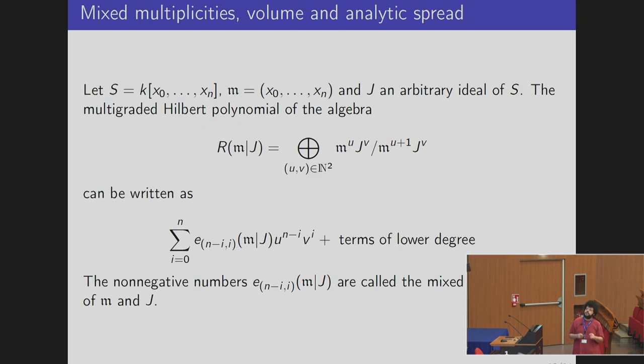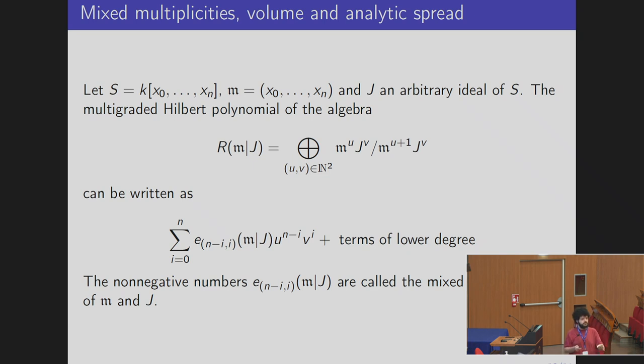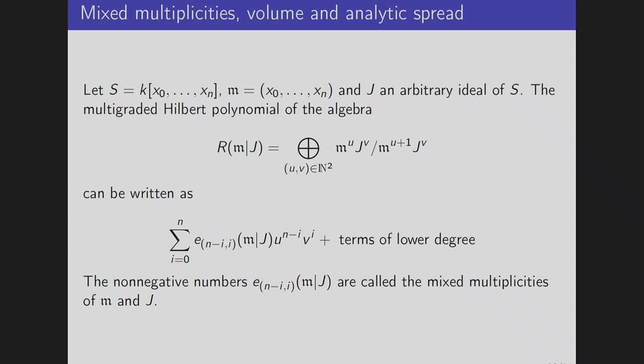To do that we introduce mixed multiplicities, which were studied by Trung and Verma. Given a polynomial ring with an arbitrary ideal I and the maximal homogeneous ideal m, we look at the multi-graded Rees algebra — in this case just two ideals — and then at the Hilbert polynomial of the quotient of the Rees algebra. Since we have more than one grading, we have more than one leading coefficient; these highest-degree terms are called the mixed multiplicities of m and I.